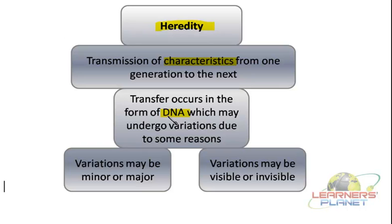When this DNA is transferred, as we have studied in the process of reproduction, there is initially a copying of DNA. If it is asexual reproduction, this copying of DNA will take place and it will be distributed into the two daughter nuclei or into multiple cells based on what mode of asexual reproduction the organism is following. But in the case of sexual reproduction, initially there is the formation of gametes — the formation of haploid cells. These gametes themselves are the haploid cells.